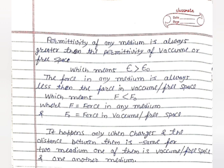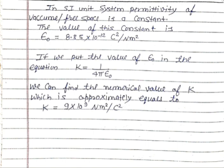These conditions are only valid when the charges and the distance between them are the same. To compare permittivity and force across two media — such as one medium and vacuum or free space — the values of charges and distance used must be the same in both cases.